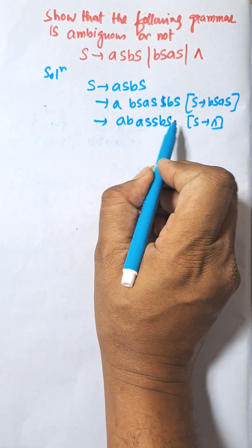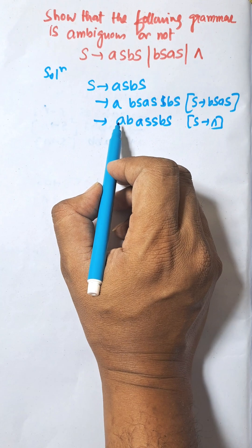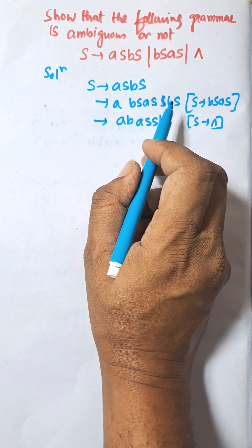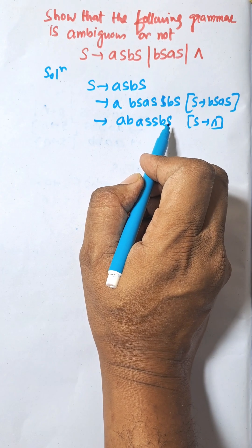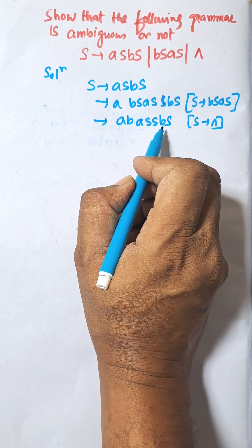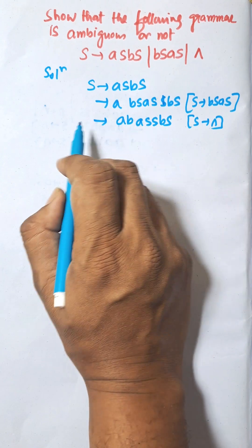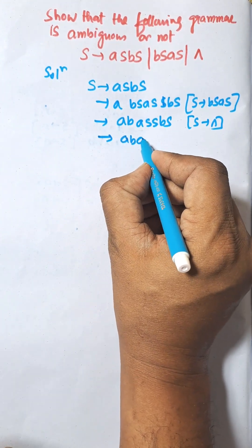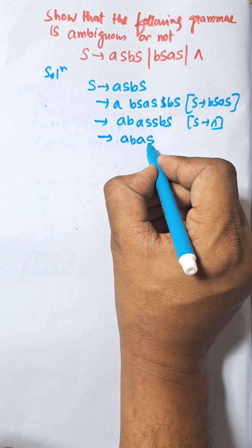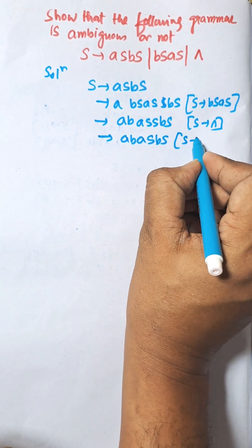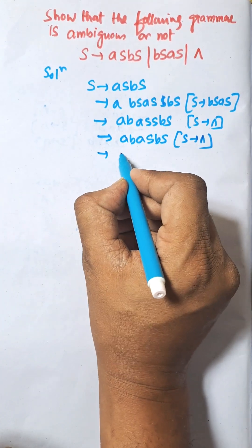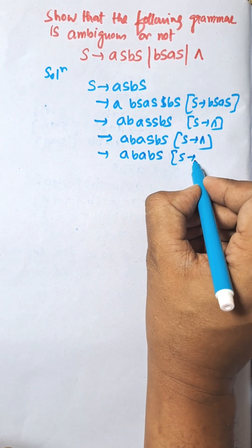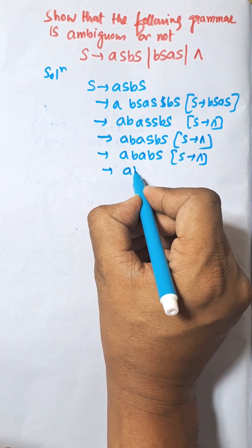You can choose leftmost derivation or rightmost derivation. In leftmost derivation, you put the leftmost variable first, then the next. In rightmost derivation, you put the rightmost variable first. Here I am choosing leftmost derivation: ab — this S is empty — meaning aSbS, S is empty. Again putting S as empty: ab, last empty, that is abab.